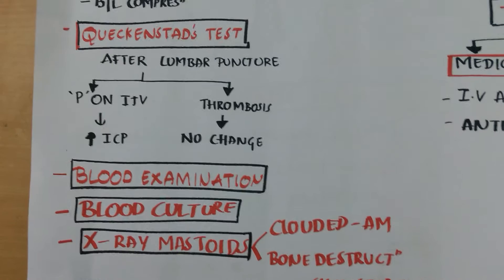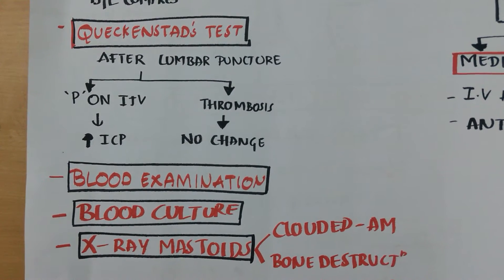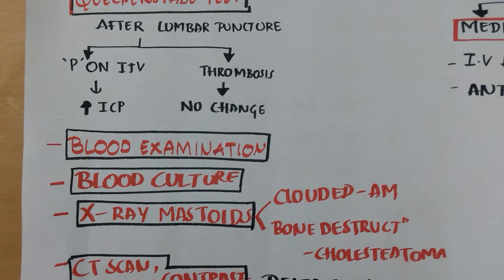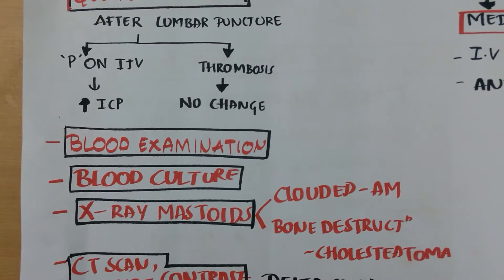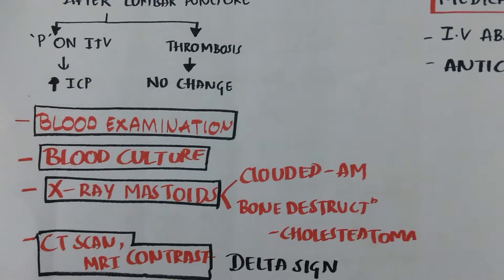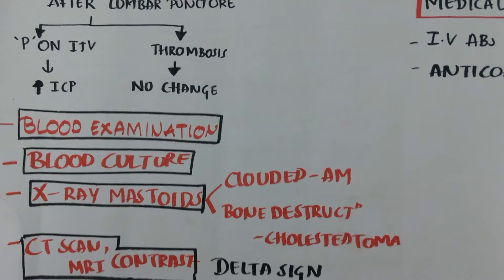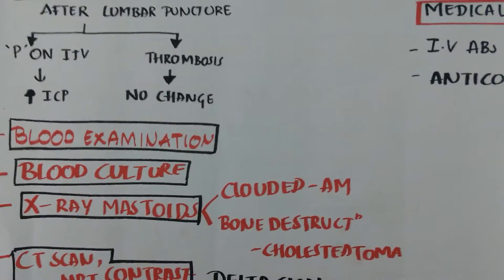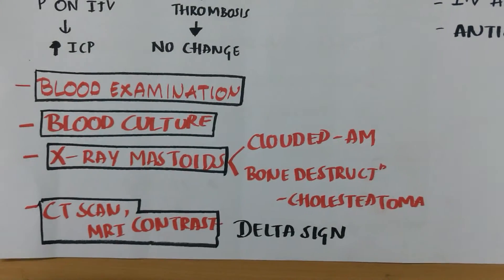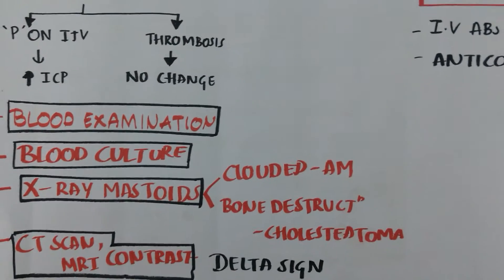Blood examination: high leukocyte count is present, which differentiates it from extradural abscess and sinus meningitis. Blood culture is mostly taken during rigor, which is helpful. X-ray mastoids is done to exclude acute mastoiditis and cholesteatoma. Clouded air cells are seen in acute mastoiditis and bony destruction in cholesteatoma. CT scan and MRI with contrast shows thrombosis, which represents the delta sign.